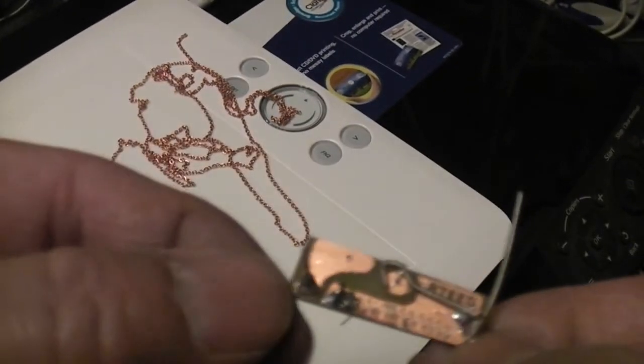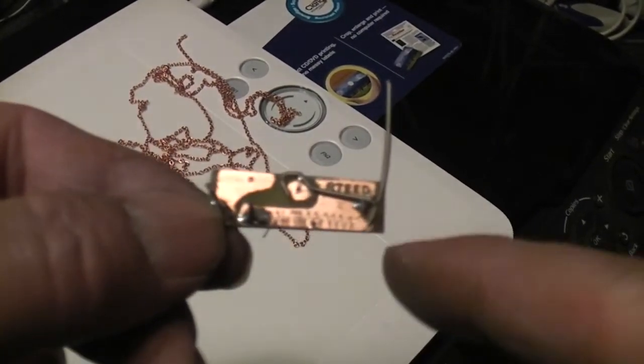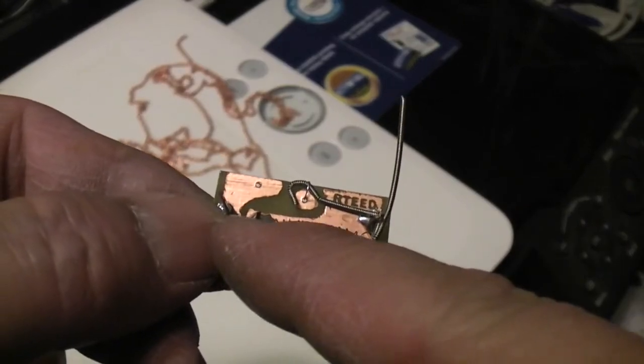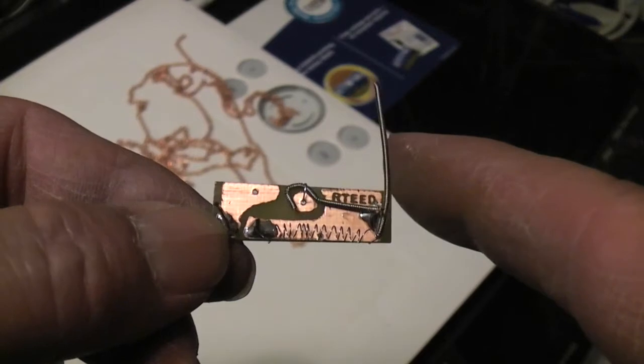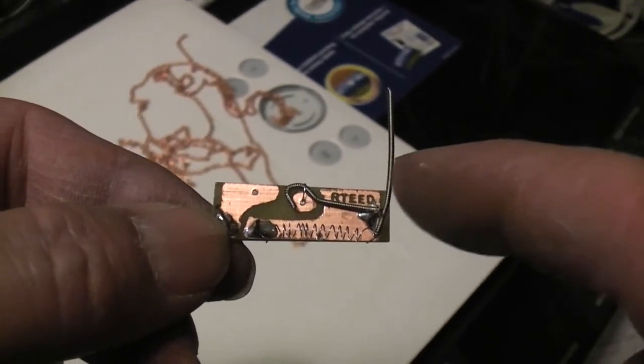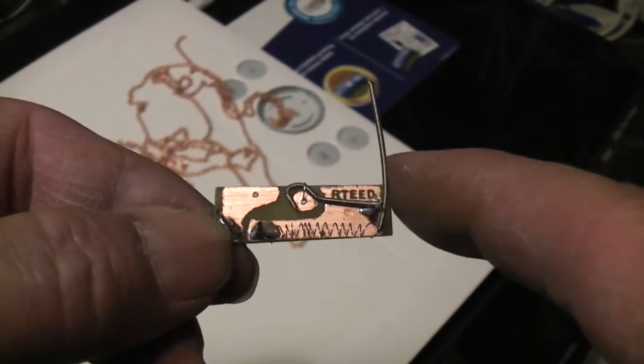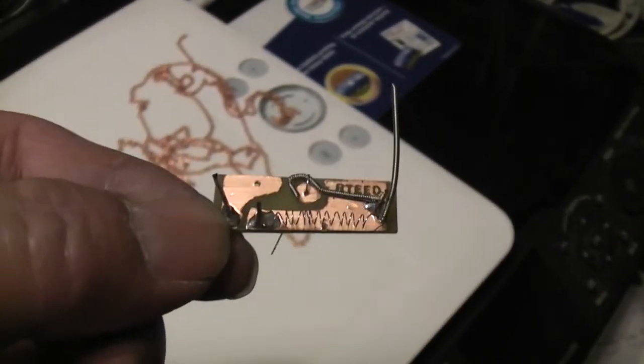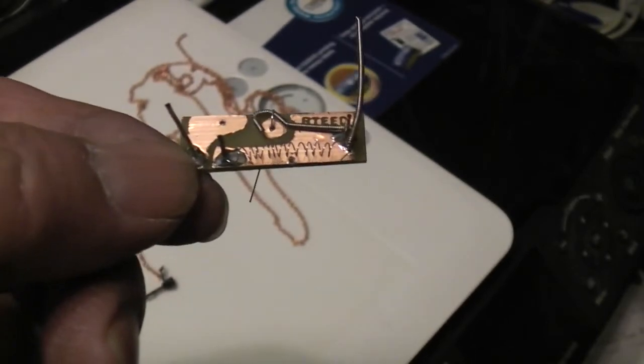However, muscle wire can't be soldered. It doesn't hold solder. So you have to tie it on, use a special knot to tie it, and then put a little dab of solder to help hold it in place. That's one of the problems with muscle wire is it doesn't solder. So that's where we're at now.